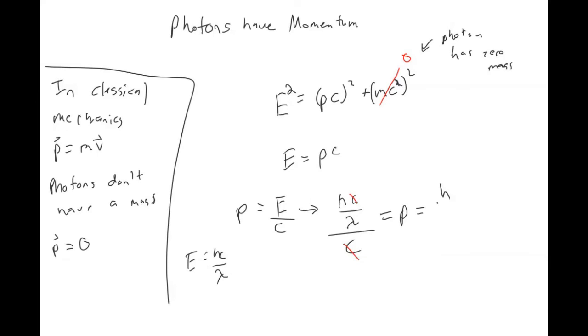Remember, h is the Planck's constant and lambda is the wavelength. You could also write that in terms of the frequency, but we usually just leave it in terms of the wavelength. This is something that has implications.